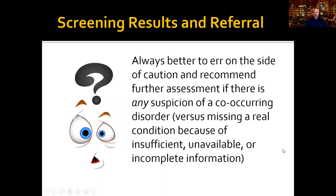When doing a screening, it is always better to err on the side of caution and recommend further assessment if there is any suspicion of a co-occurring disorder. It is much better to refer for a more in-depth assessment than to assume it's probably not a problem and wait to see what happens — you don't want to miss a real condition because you didn't have the correct information. So if you suspect any indication of a co-occurring mental health disorder, you are going to refer for further assessment.